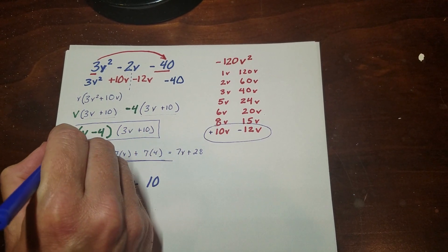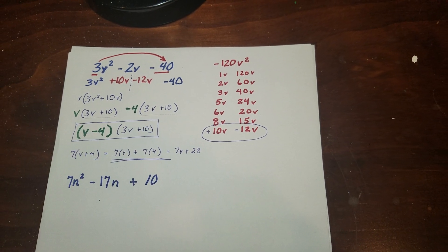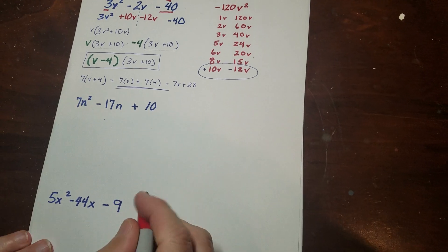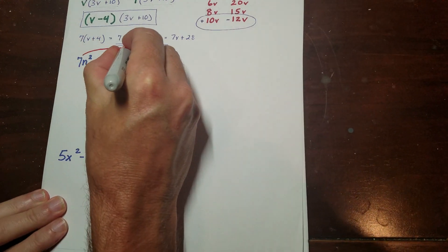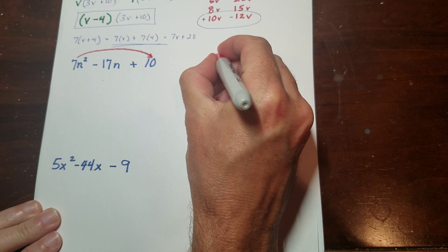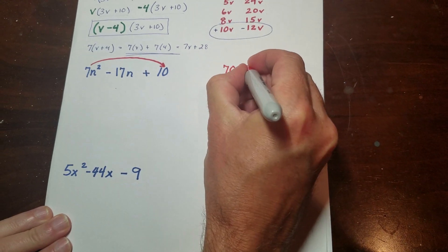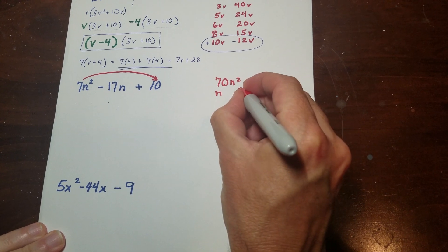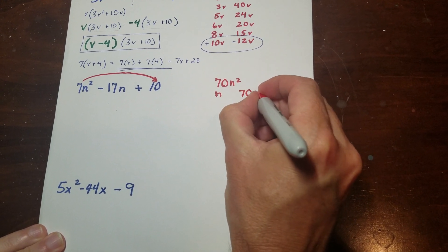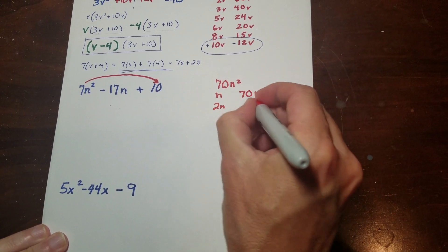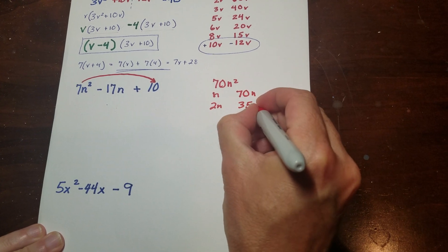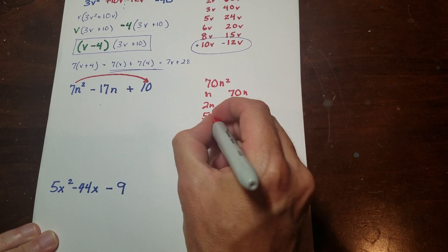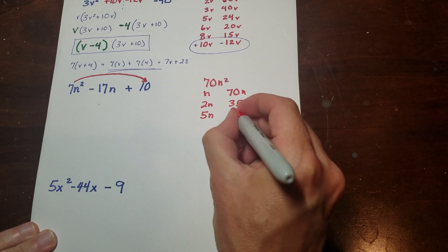So I'm going to do the other ones right here. So I'm going to start by doing 7 times 10 first, which is going to give me 70n squared. And then I'm going to write down 3 doesn't work, 4 won't work, 5 will work, I think with 14.